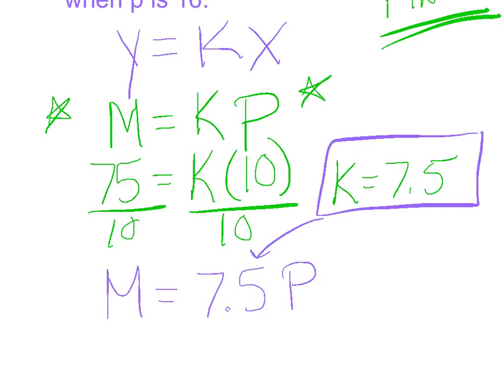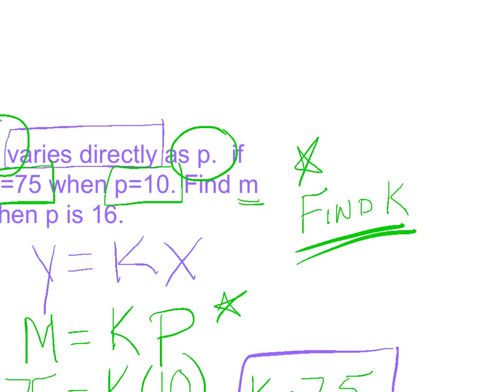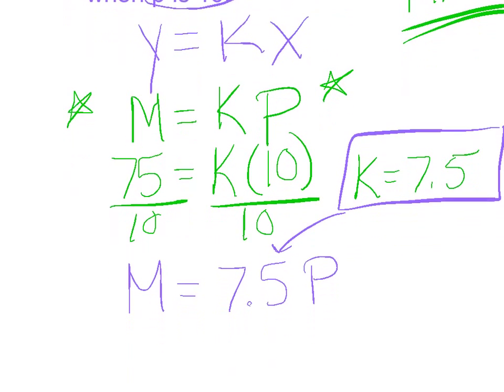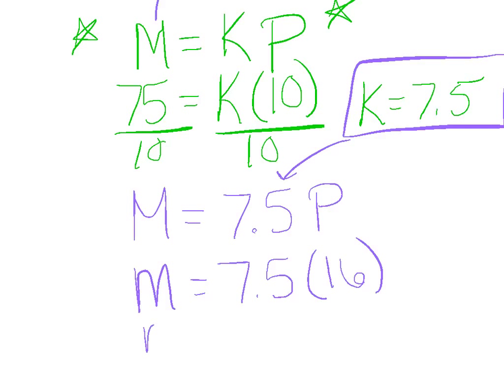Now I can actually solve the problem. They said find M when P is 16. So P is 16, and I'm just going to substitute that 16 into my letter P. So M equals 7.5 times 16. Grab your calculator, and M should equal 120. So our goal for direct variation is to memorize the formula Y equals KX, put it in terms of the variables in the problem, solve for K, and then answer the question.